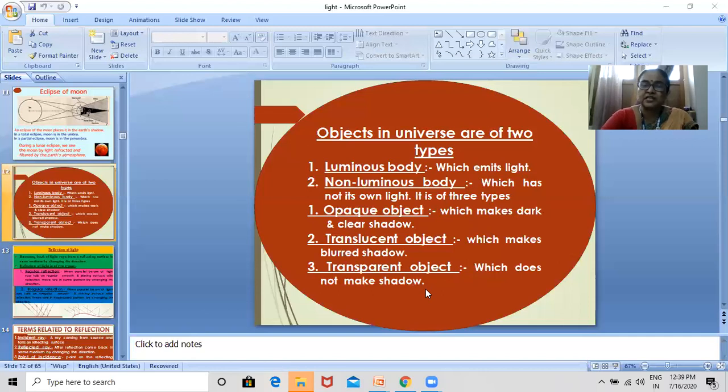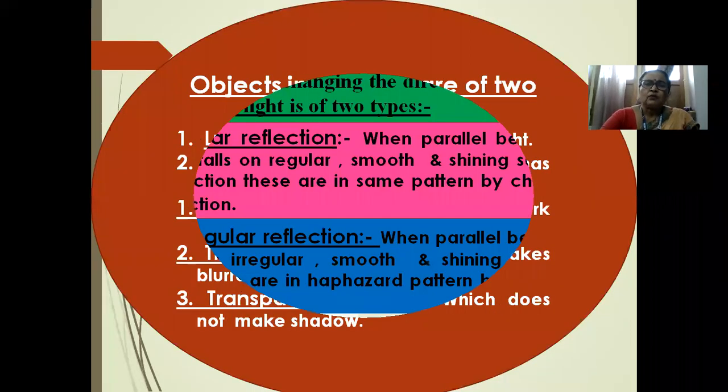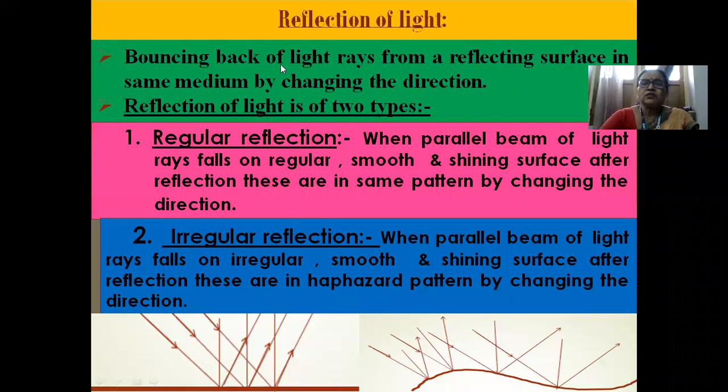Next, what is our term related to the reflection. You know that reflection is bouncing back of light rays from reflecting surface in the same medium by changing the direction. So that is called reflection of light.